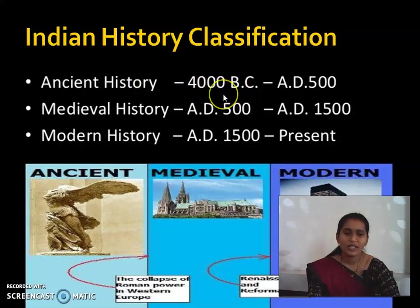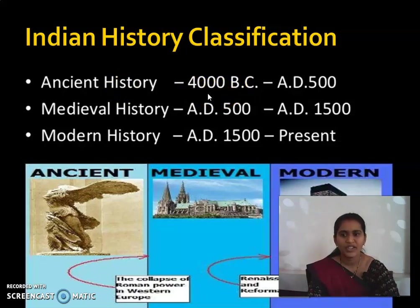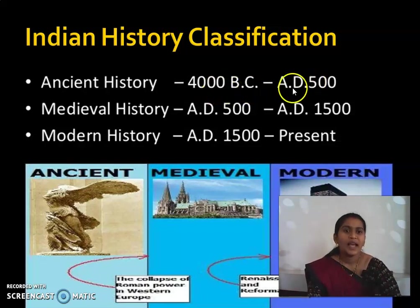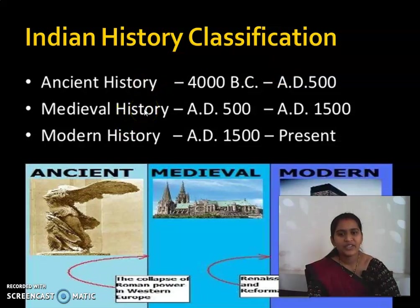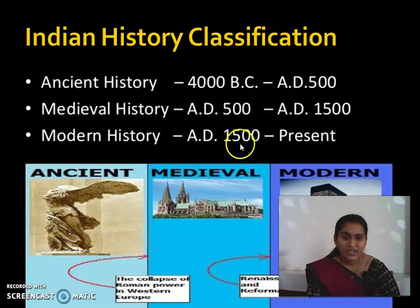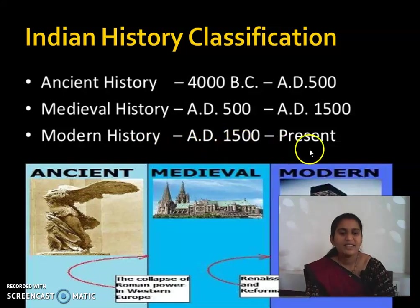Note: the time periods are not mentioned in your textbook, so make a note of these. Ancient history: 4000 BC to AD 500. Medieval history: AD 500 to AD 1500. Modern history: AD 1500 to the present.